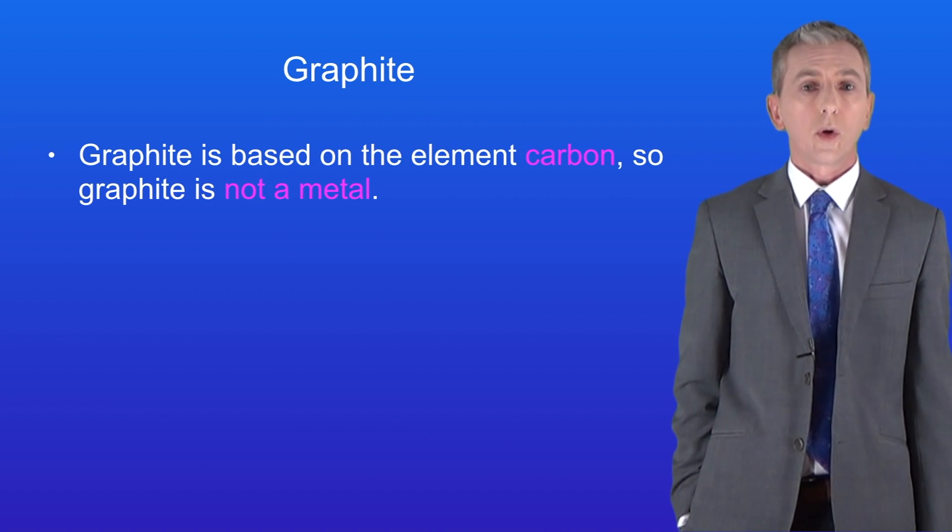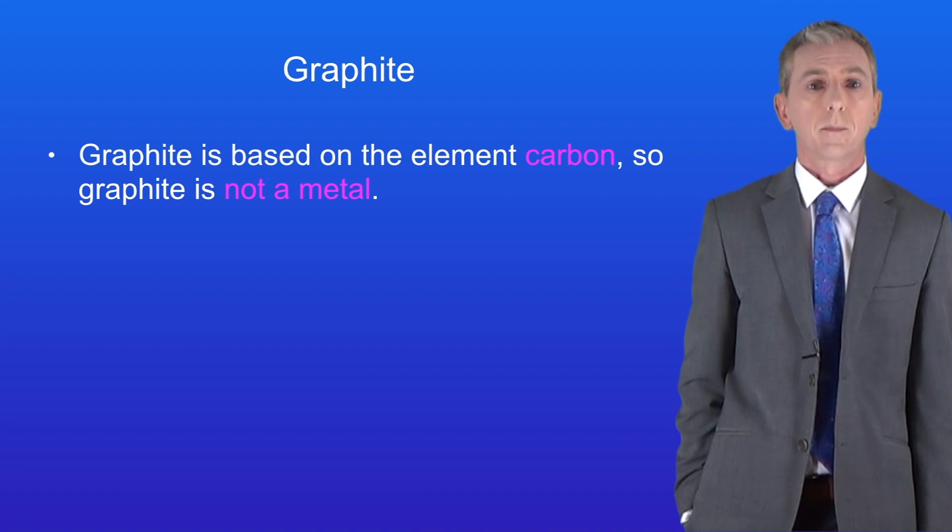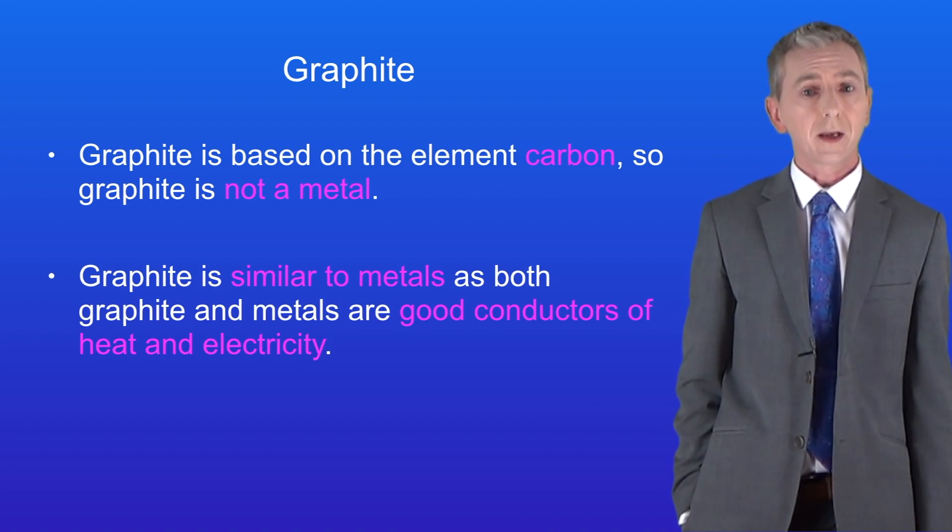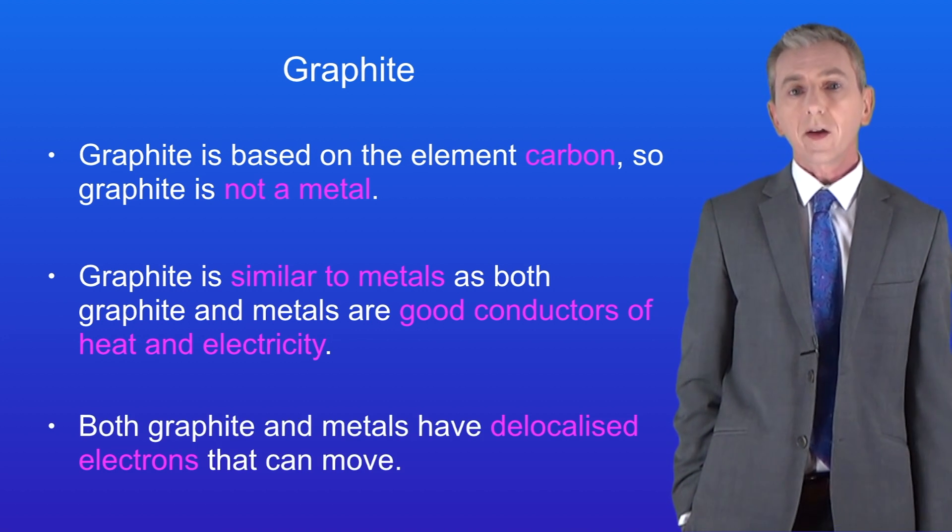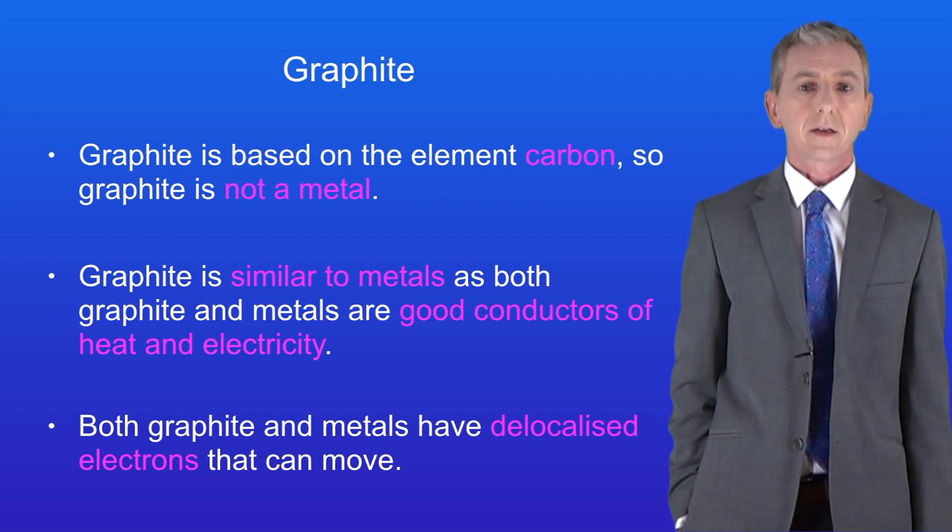Now it's really important to remember that graphite is based on the element carbon so graphite is not a metal. However graphite is similar to metals as both graphite and metals are good conductors of heat and electricity and that's because both graphite and metals have got delocalized electrons that can move. We're going to look at metals in a later video.